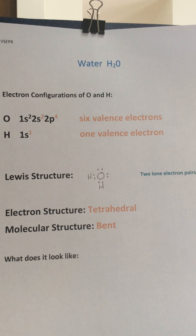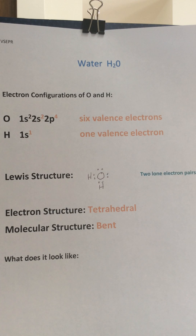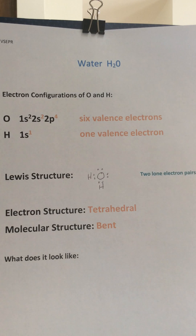We know that oxygen is 1s², 2s², 2p⁴ — 6 valence electrons. Hydrogen is 1s¹ — 1 valence electron. And the Lewis structure I've got indicated right here.